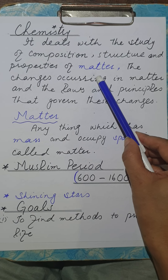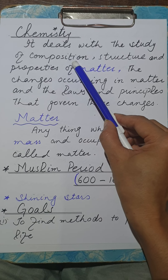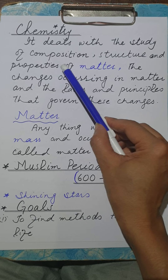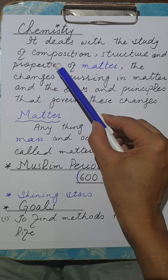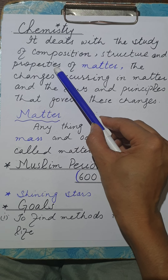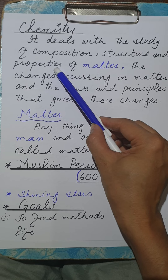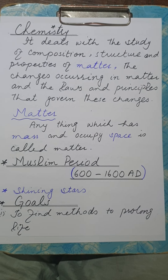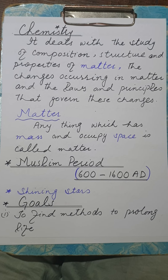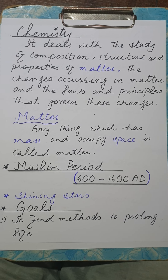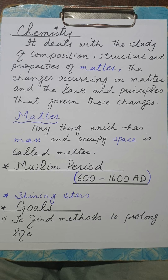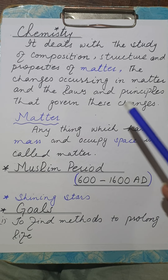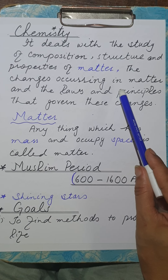So chemistry is the study of matter. In matter we discuss the composition of the matter, the structure of the matter, and the properties of the matter — both physical and chemical properties. Chemists are mostly interested in the chemical properties of substances. Besides these, we also study the changes occurring in the matter.